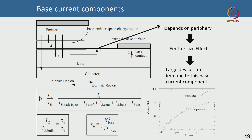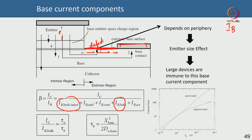In an HBT, the base current has five different components. Component 1 is the back-injected component we already discussed. Component 2 is the bulk base recombination current — the true base current — where electrons injected from the emitter recombine in the base. Component 3 is the surface recombination current: because the base contact is on the side, carriers travel along the surface which has defects, dangling bonds, and moisture. These can cause recombination, giving rise to IB_surf. Passivating this surface suppresses it significantly.